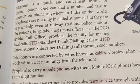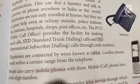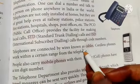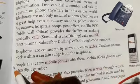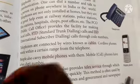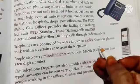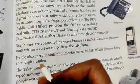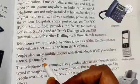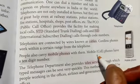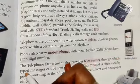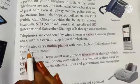A telephone call to another city in the same country is called an STD call. Telephones are connected by wires known as cables. Cordless phones work within a certain range from the telephone. People also carry mobile phones, also called cell phones, which have a 10-digit number.